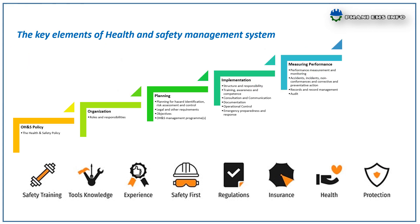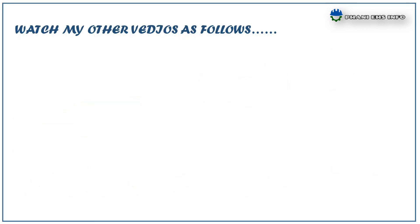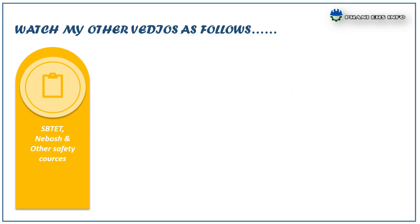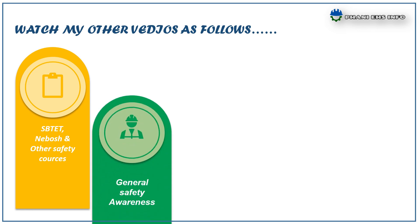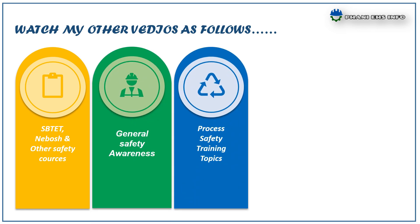Measuring Performance, which includes accidents, incidents, CAPA, etc.; and Reviewing, which includes records, record management, and audit. This is about safety management system. Thanks for watching, and please don't forget to subscribe and share my videos. Have a safe day.